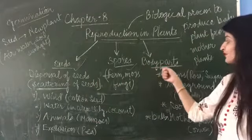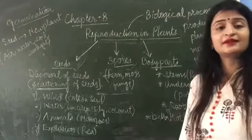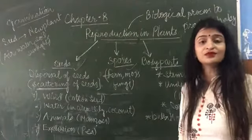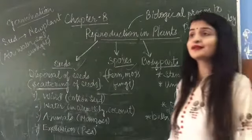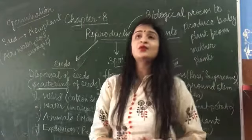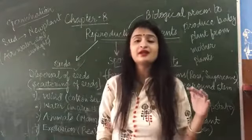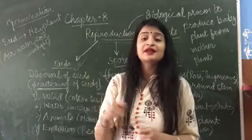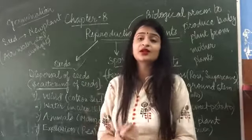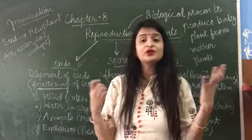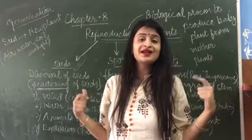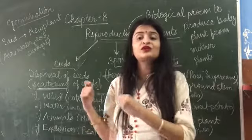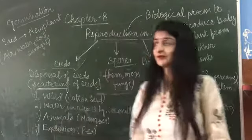The next method is body parts. Body parts se kaise plant reproduce kar sakta hai? The first one is stem. Examples are rose and sugarcane — these are stem plants. If we have a big rose plant at home and we cut one branch and plant it in another pot of soil, that plant will grow into a new plant. We take a body part of a big plant and sow it in different soil.